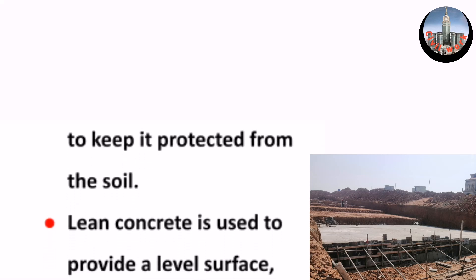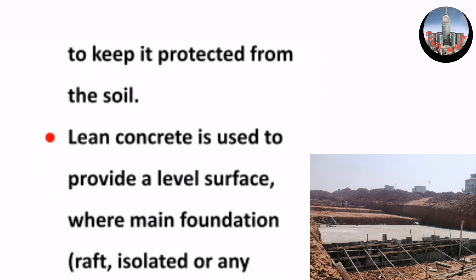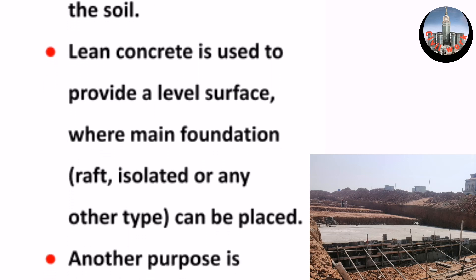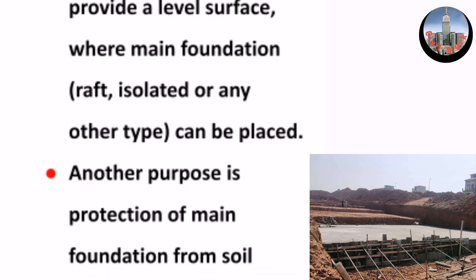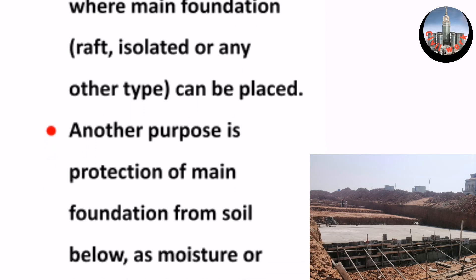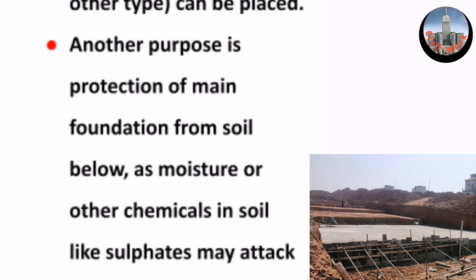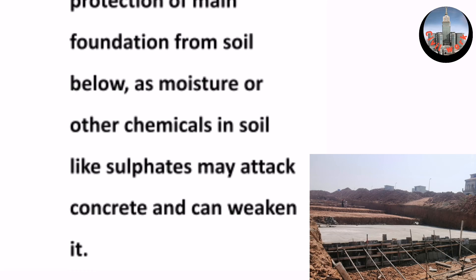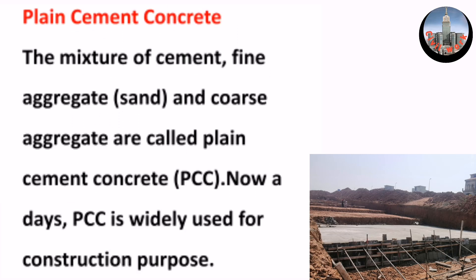Lean concrete has a lower level of cement, which is why it is mostly used for filling or under foundations to keep them protected from the soil. It is used to provide a level surface where the main foundation — raft, isolated, or any other type — can be placed. Another purpose is protection of the main foundation from soil below.